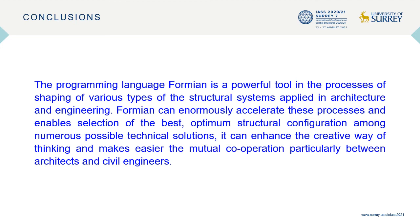The programming language Formian is a powerful tool in the processes of shaping various types of structural systems applied in architecture and engineering. Formian can enormously accelerate these processes and enable selections of the best optimal structural configuration among numerous possible technical solutions. It can enhance creative ways of thinking and makes easier the mutual cooperation, particularly between architects and civil engineers.